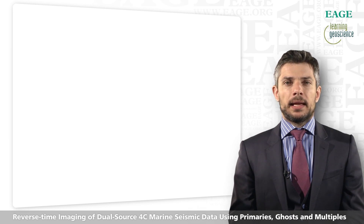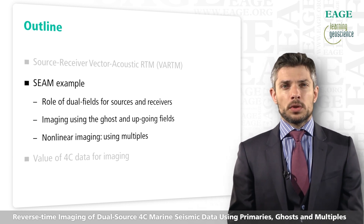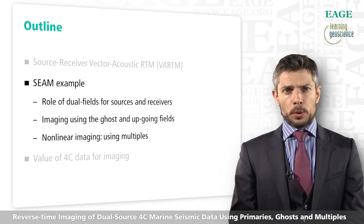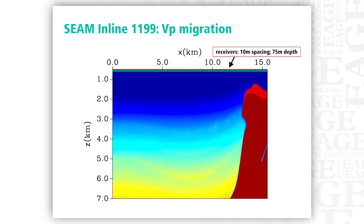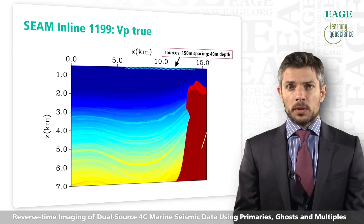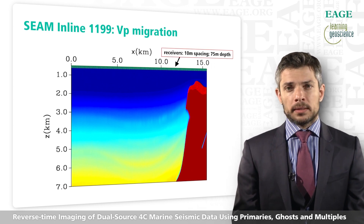Moving to a more complex example using the SEAM model — the example shown at the beginning — we discuss the role of dual fields for sources and receivers, imaging using ghost and up-going fields, and internal multiples. The SEAM data is a 2D subset of one inline. Sources are spaced at 150 meters at 40 meters depth, using a 20 Hz centered Ricker wavelet. Receivers are spaced at 10 meters at 75 meters depth with a fixed spread. The true model includes all interfaces; the migration model smooths the sediments while retaining the salt.